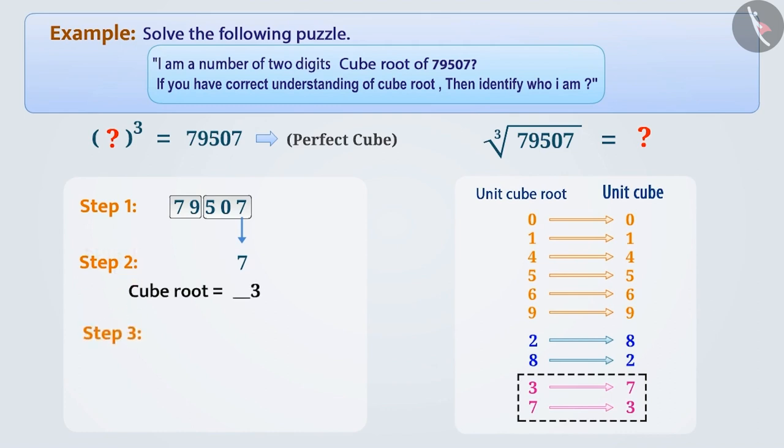Step 3: We see that the next set of digits is 79. Number 79 is between the cube of 4, that is 64, and cube of 5, that is 125. 64 as a number is smaller than 79. So, in the tenths place of cube root of 79,507, we will write 4. This gives us the number 43, which is the cube root of 79,507.